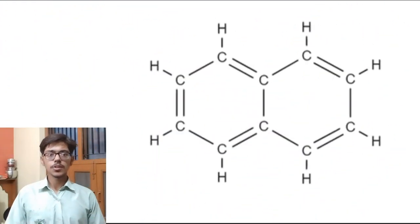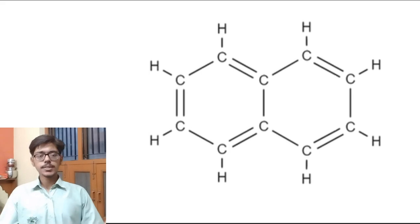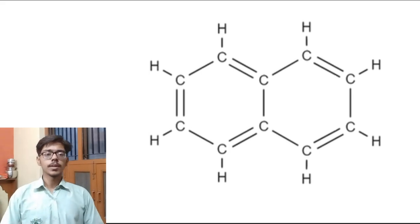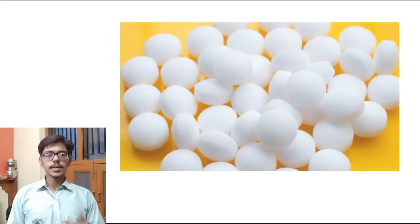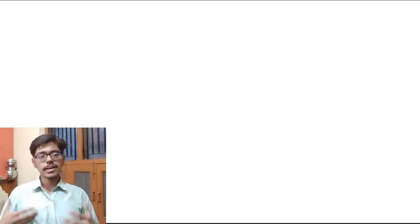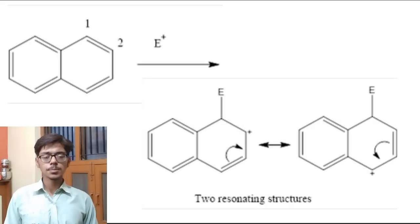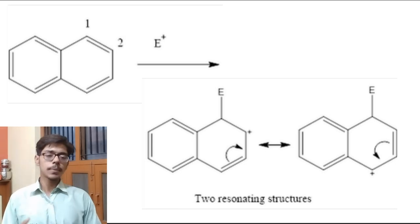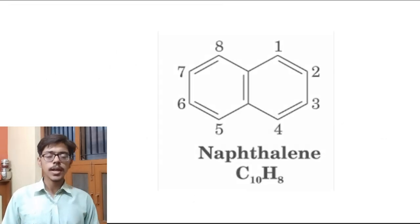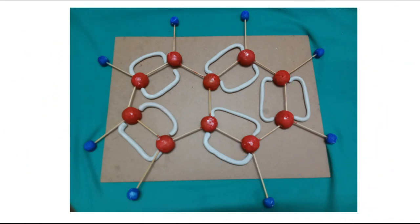Chemistry lovers, hold on — here is something more interesting. Naphthalene is not just a passive participant but an active player during chemical reactions. It undergoes a typical electrophilic substitution reaction in which an electrophile replaces hydrogen at positions 1 and 2.